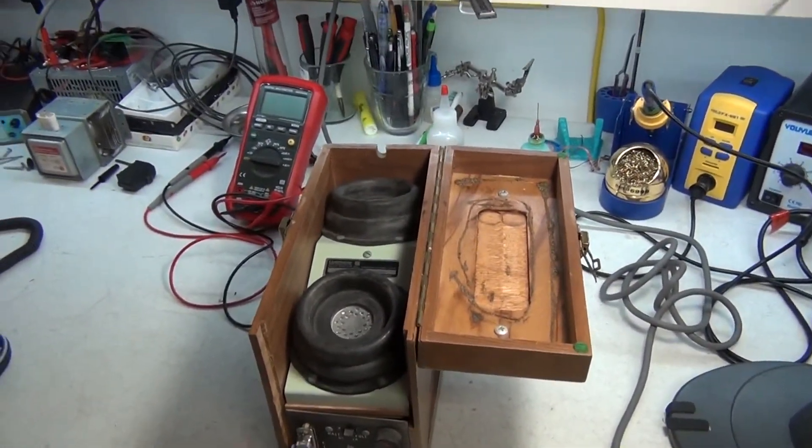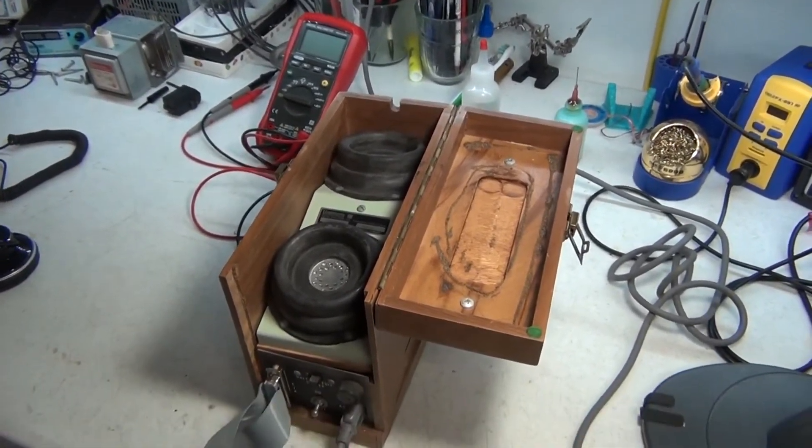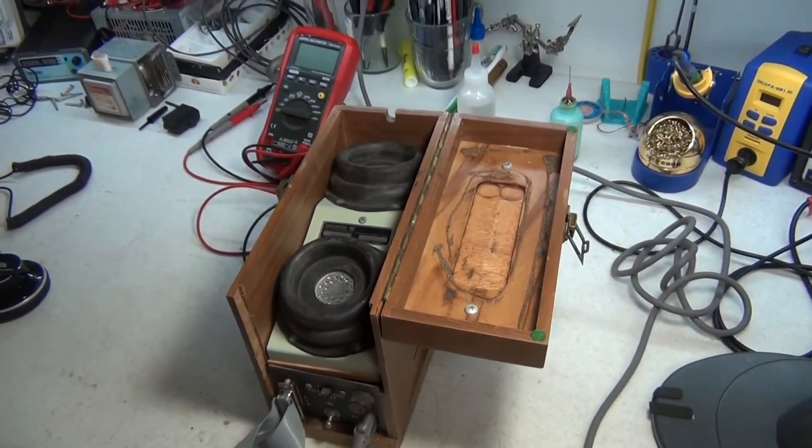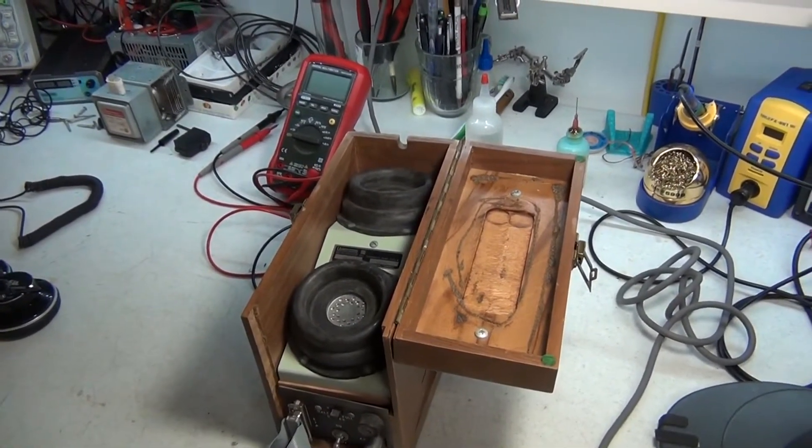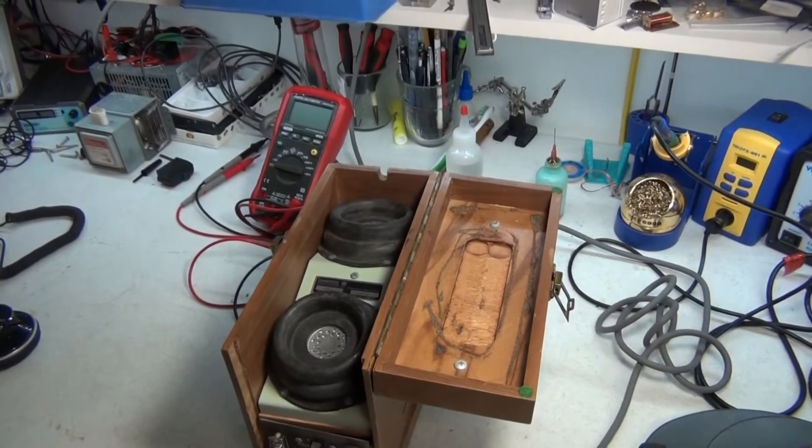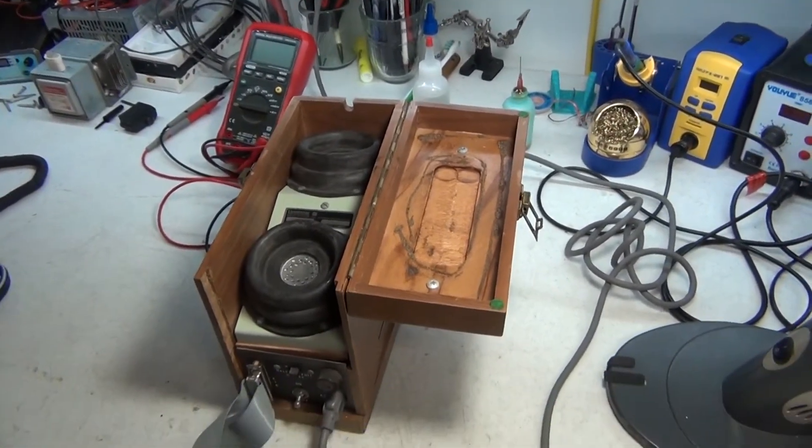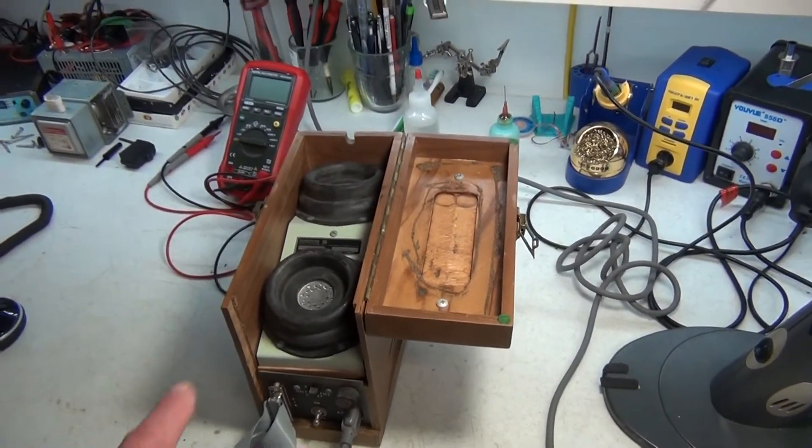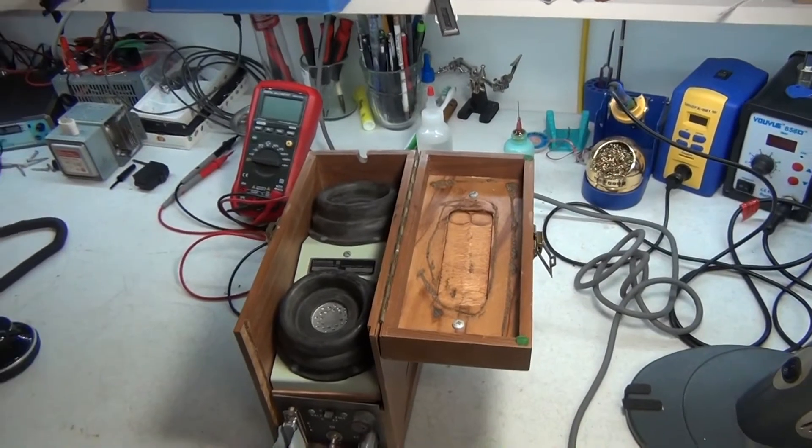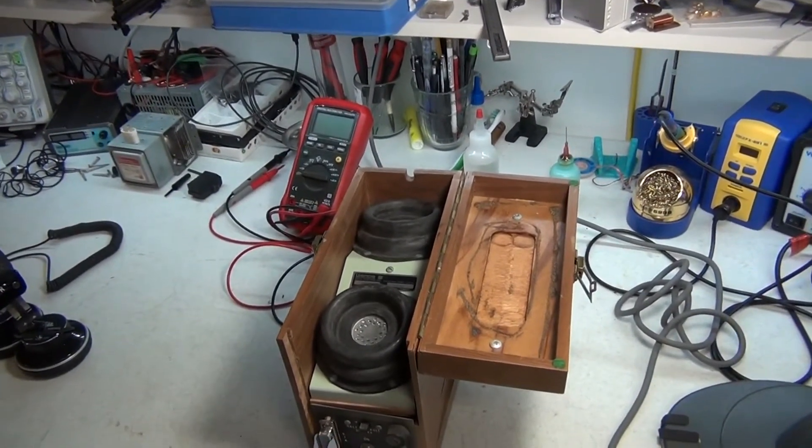This is a 300 bit per second modem. Actually the Bell 103 standard was the second standard for acoustical couplers or for modulation. This uses something called audio frequency shift keying and the originating station, which this is, just basically has two tones: a mark tone at 1270 and a space tone at 1070 Hertz.